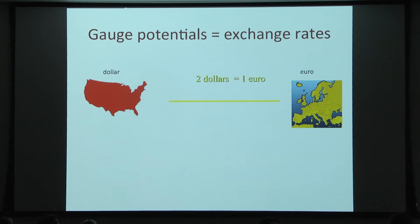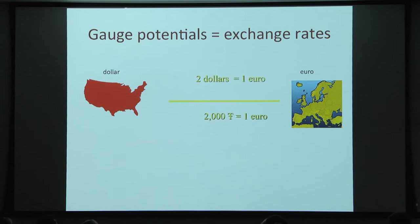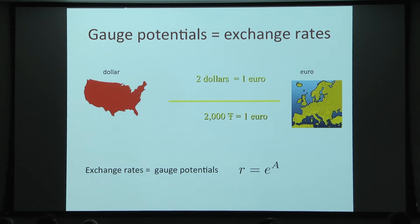Now, what are gauge potentials? Gauge potentials are the exchange rates. There is some locality that uses dollars and some other one that uses euros, with some exchange rate — say two dollars equals one euro. If we change here to Trumps, we will have 2,000 Trumps equal to one euro. So the gauge symmetry changes the gauge potentials — what we normally call the gauge field in physics. The log of the exchange rate, the ratio of these two numbers, is the gauge field.